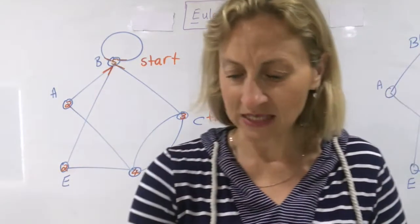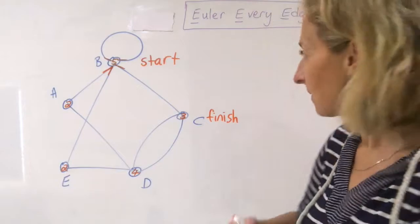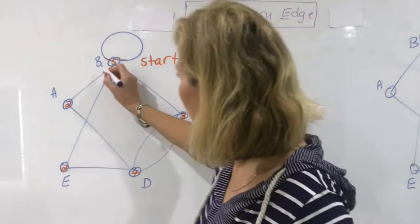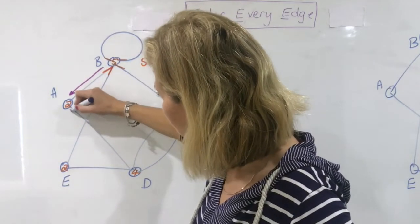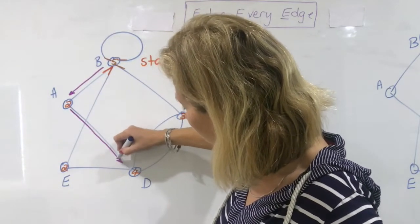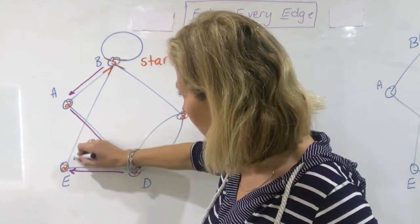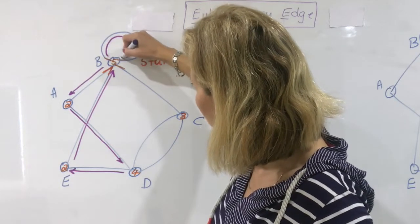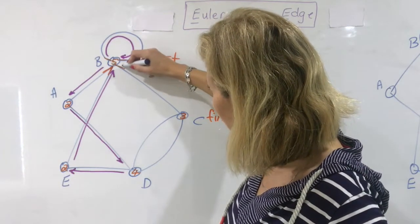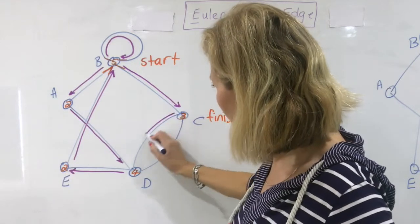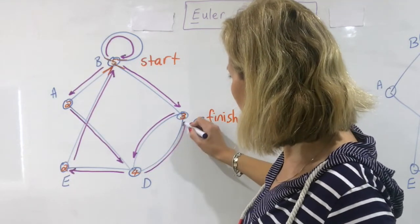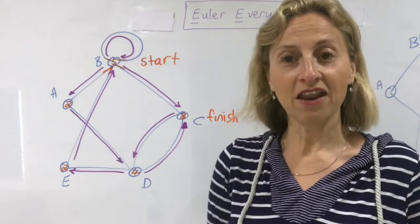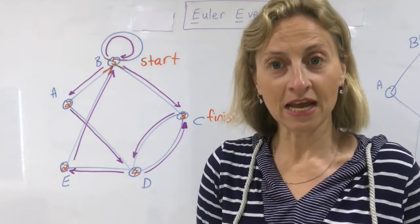This can be a little bit hard to think about on your own, so let's think about how we can do that. I'll use a different colour. I can go down here, then down there, then across there. I can go all the way up to there, go around my loop, come back down here, go around to there and back to my finishing point. That's my Eulerian trail.